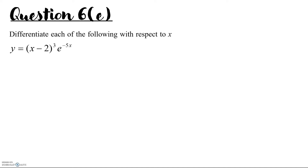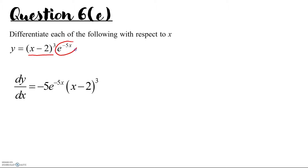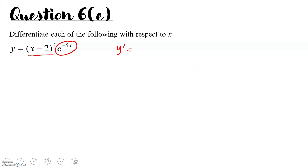y equals (x minus 2) to the power of 3, times e to the negative 5x. Before we differentiate this, you have to recognize this is the multiplication of 2 functions. So this is your first function and this is your second function. When we have the multiplication of 2 functions, we need to use the product rule: y prime equals u·v prime plus v·u prime.